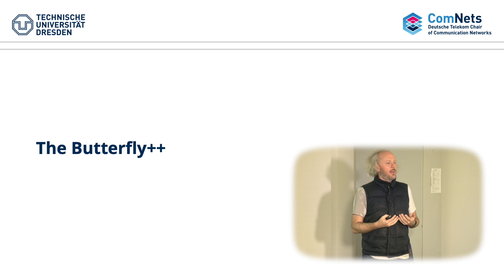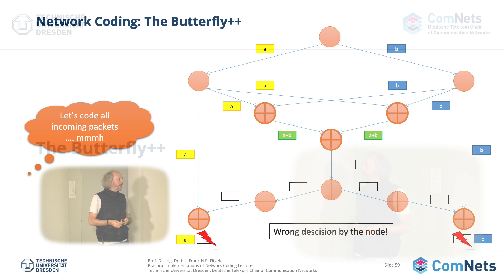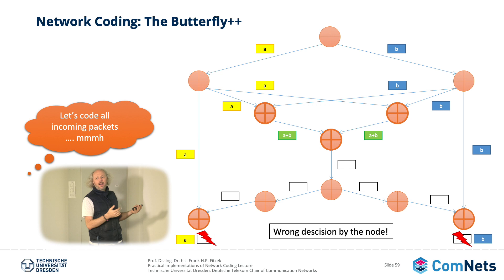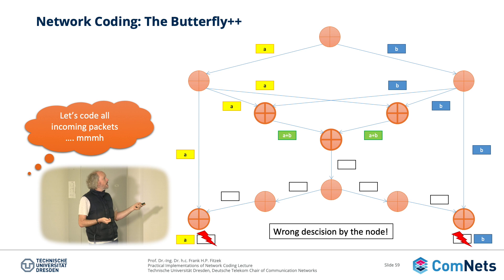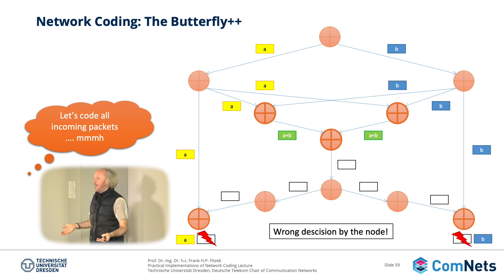Coming back to the butterfly, I'll give you some extensions. It's an example of what you should and shouldn't do. Imagine I make the butterfly a little bigger — you still have one source, two destinations, and you send packets with an encoding vector. Here you see an example where two intermediate nodes both get the same input, code the same thing together, pass it to the next node, and suddenly the result is zero. You get twice the same input, you XOR it, it's zero.